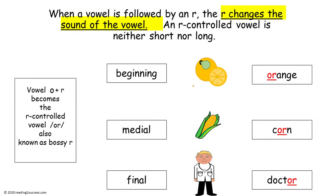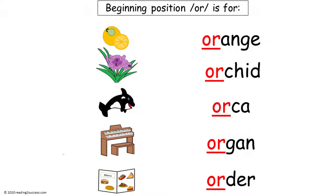Now have kids work with the R-Controlled Vowel O-R. When the vowel O has R added, it becomes the R-Controlled Vowel and makes the OR sound. In the beginning position we have 'orange,' in the medial position 'corn,' and in the final position 'doctor.' With kids, point to each picture and say the word. Remind kids the O-R sound is in the beginning position: orange, orchid, orca, organ, and order.